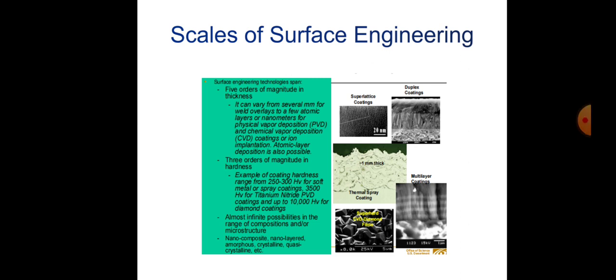The scales of surface engineering span five orders of magnitude, varying from several millimeters for weld overlays to a few atomic layers of nanometers for PVD, CVD coatings, and ion implantation. There are also three orders of magnitude in hardness; coating hardness ranges from 250 to 300 HV. Coating structures include nanocomposite, nanolayer, amorphous, crystalline, superlattice, duplex, thermal spray, and multilayer coatings.